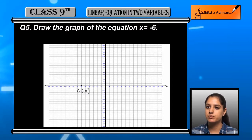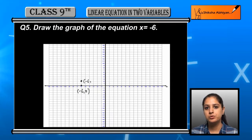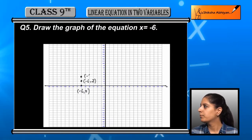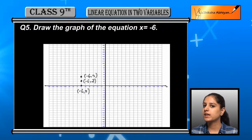Two units above the point we get minus 6 comma 2, and then two points above we get minus 6 comma 4. These three points we have now.